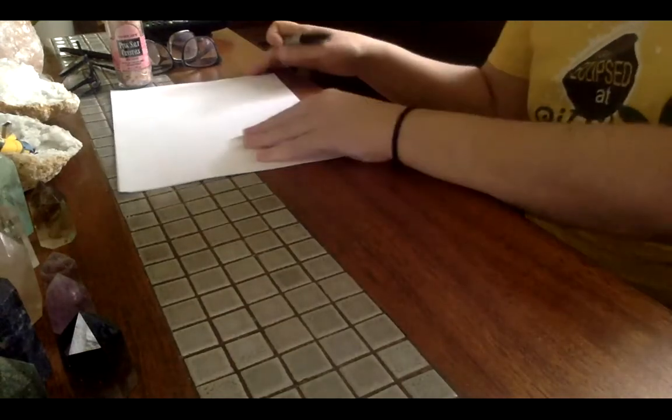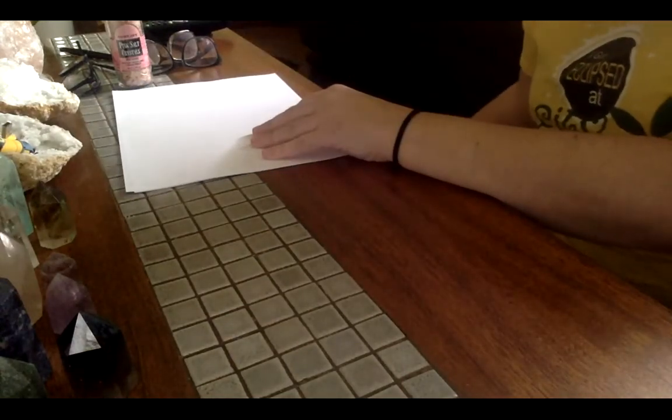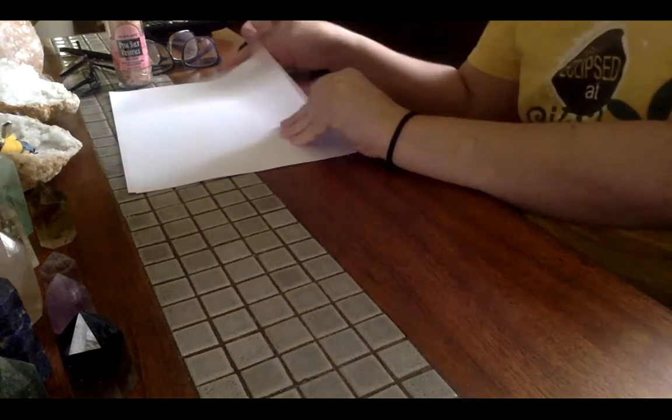So 708 written in expanded form is 700 plus 8. Easy peasy, right? All right, now on to the main event. Rounding to the nearest ten.